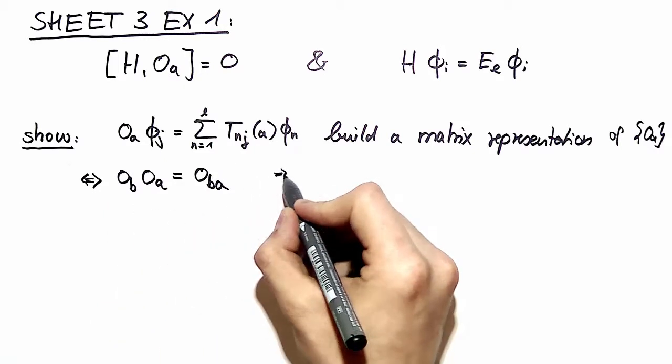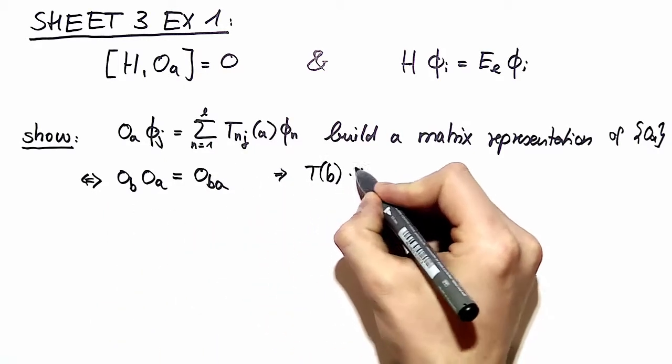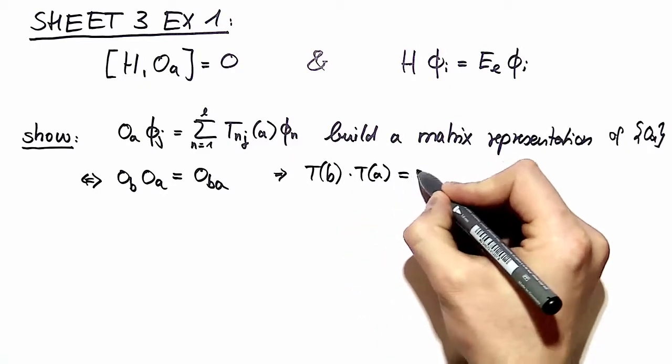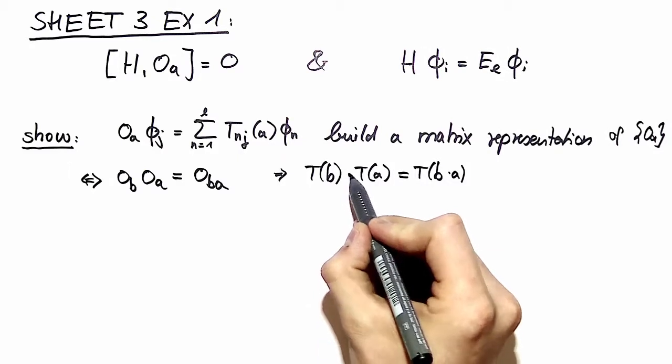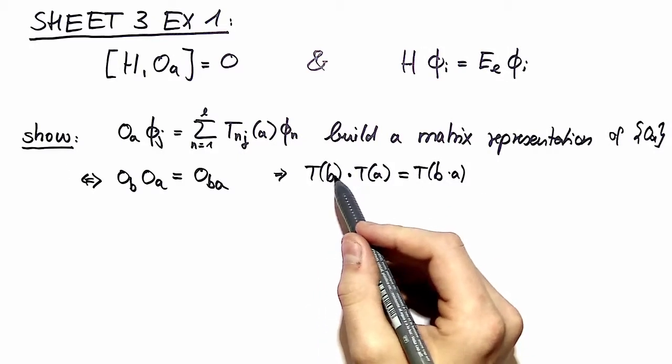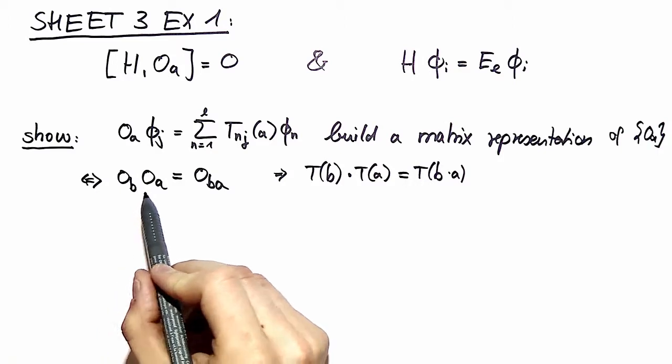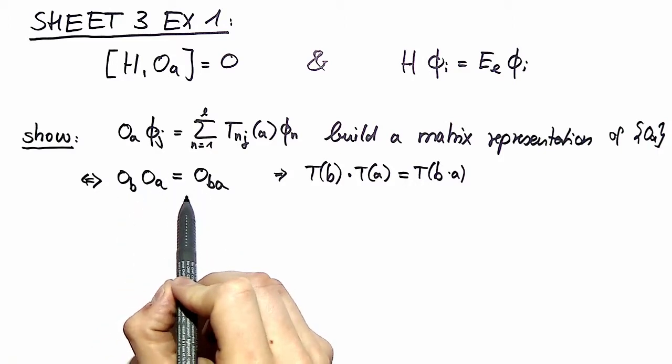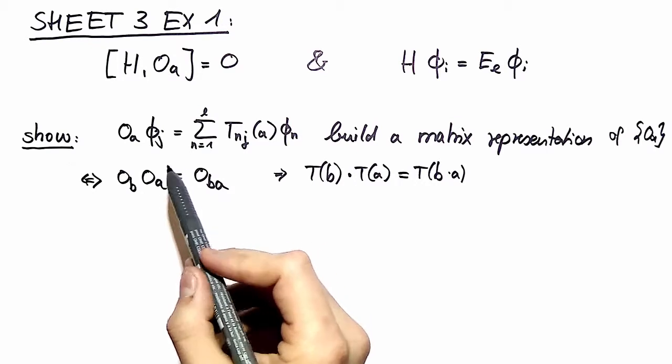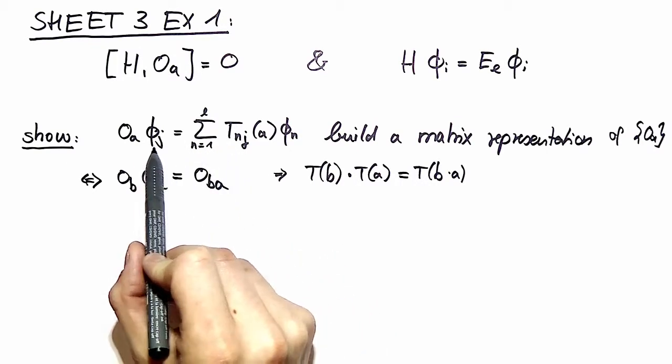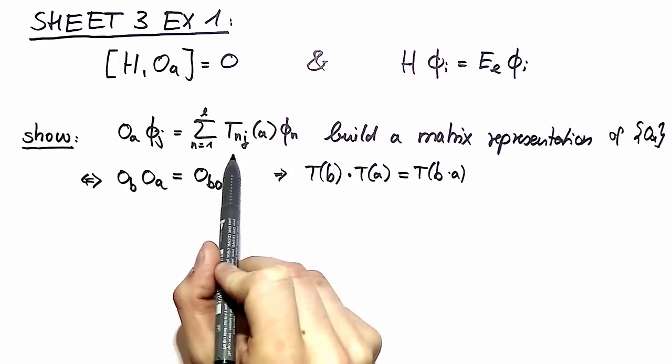And then with this condition, we have to show that the same applies for our matrix representation, where this is our usual matrix multiplication. So how do we get our Ts involved? Well, we have the definition of our T's over here. So we see that we have to act on a function of our eigenspace in order to bring in our Ts.